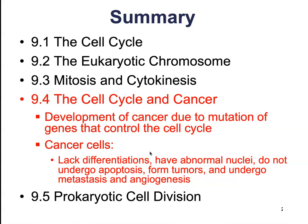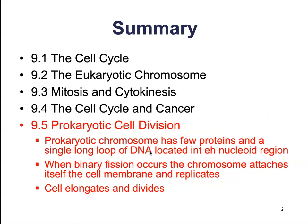Finally, we talked about prokaryotic cellular division. The prokaryotic chromosome has very few proteins and a single loop of DNA located in the nucleoid region. When binary fission occurs, the chromosome attaches to the membrane and replicates. Once replicated, the cell elongates and divides, separating the two chromosomes into each daughter cell. And that is it for this chapter on the cell cycle.